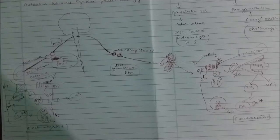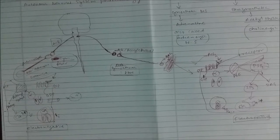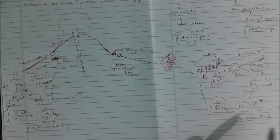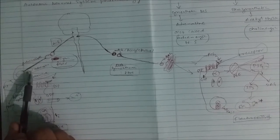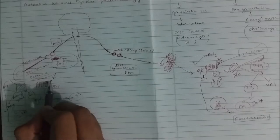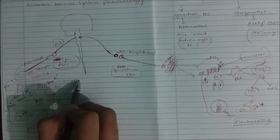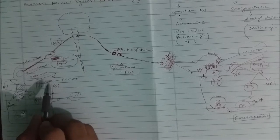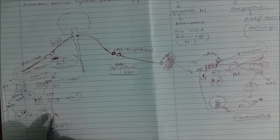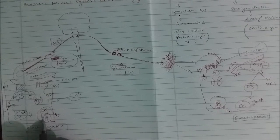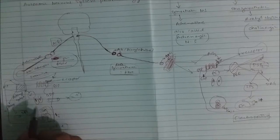You can see this cell has been electronegative and this cell has been electropositive. The neurotransmitter adrenaline is released and this receptor receives the adrenaline. Once it receives the adrenaline, the transducer mechanism goes inside the cell.